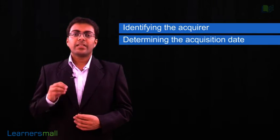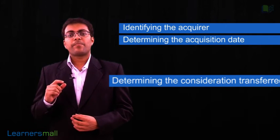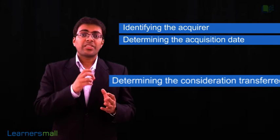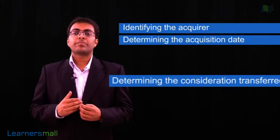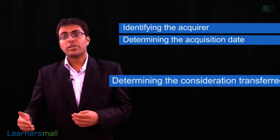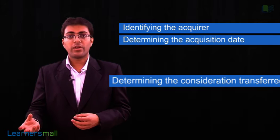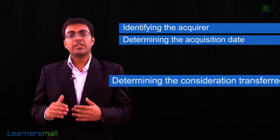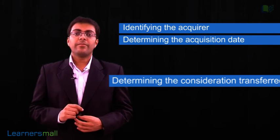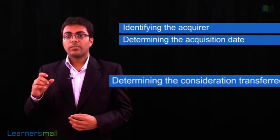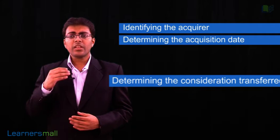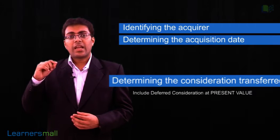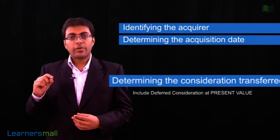The next step is to identify the consideration transferred. The consideration transferred is calculated as the acquisition date fair value of assets transferred by the acquirer to the acquired entity, plus liabilities incurred by the acquirer to the former owners of the acquired entity — for example, cash paid to equity shareholders — plus equity interests issued by the acquirer. It is important that consideration includes deferred consideration, which must be calculated at present value for it to be included as part of the consideration transferred.